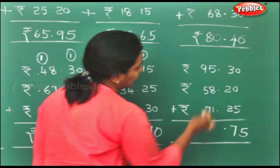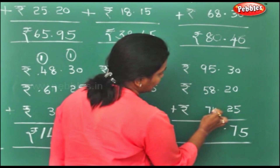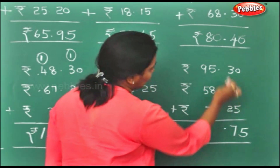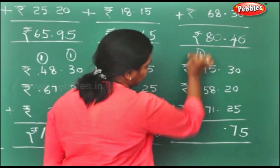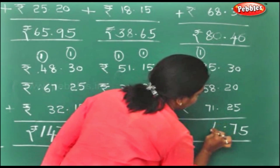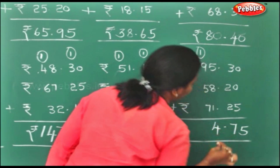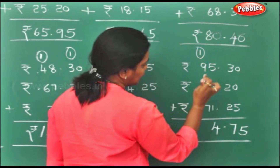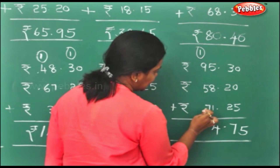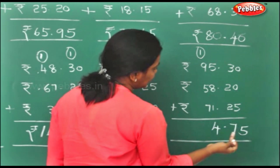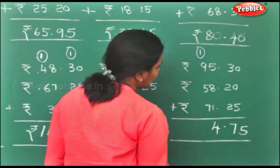8 plus 1 is 9. 9 plus 5 is 14 — carry 1 on top, 4 down. 9 plus 1 is 10. 10 plus 7 is 17, 17 plus 5.